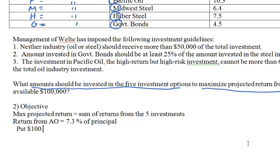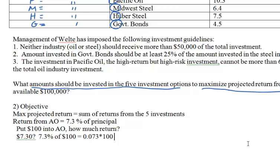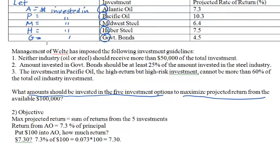For example, if you put $100 into Atlantic Oil, you would expect a return of $7.30 — that's 7.3% of $100, which means multiplying 0.073 by $100. The decision variable A is the principal, so the return from Atlantic Oil is 7.3% of A, or 0.073 times A.